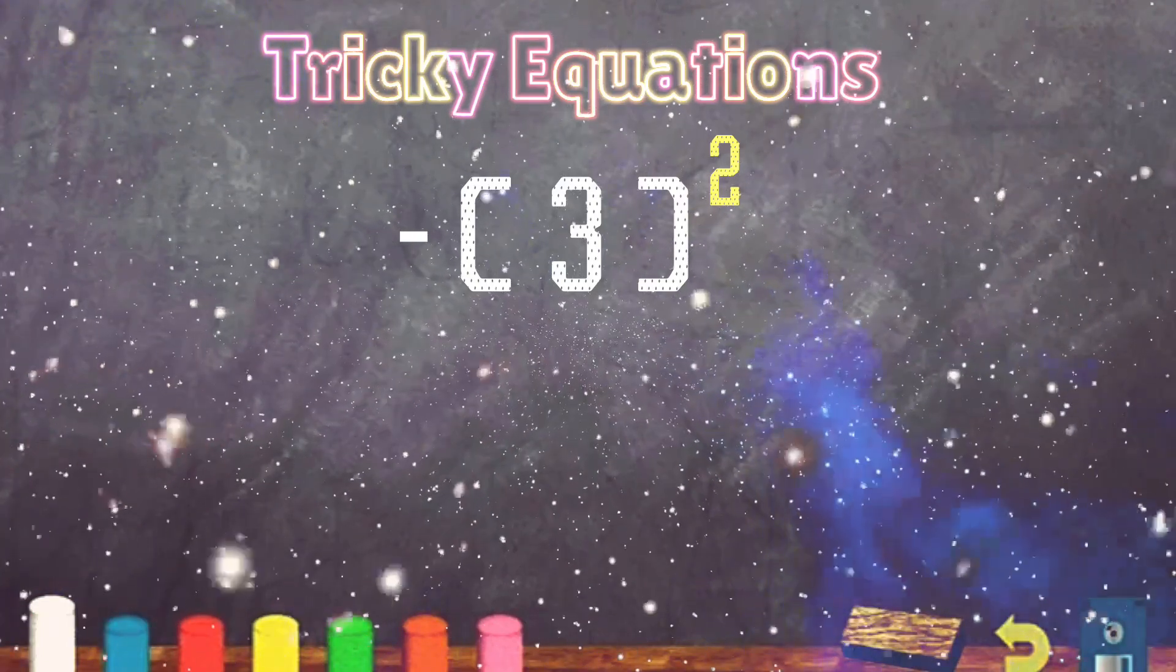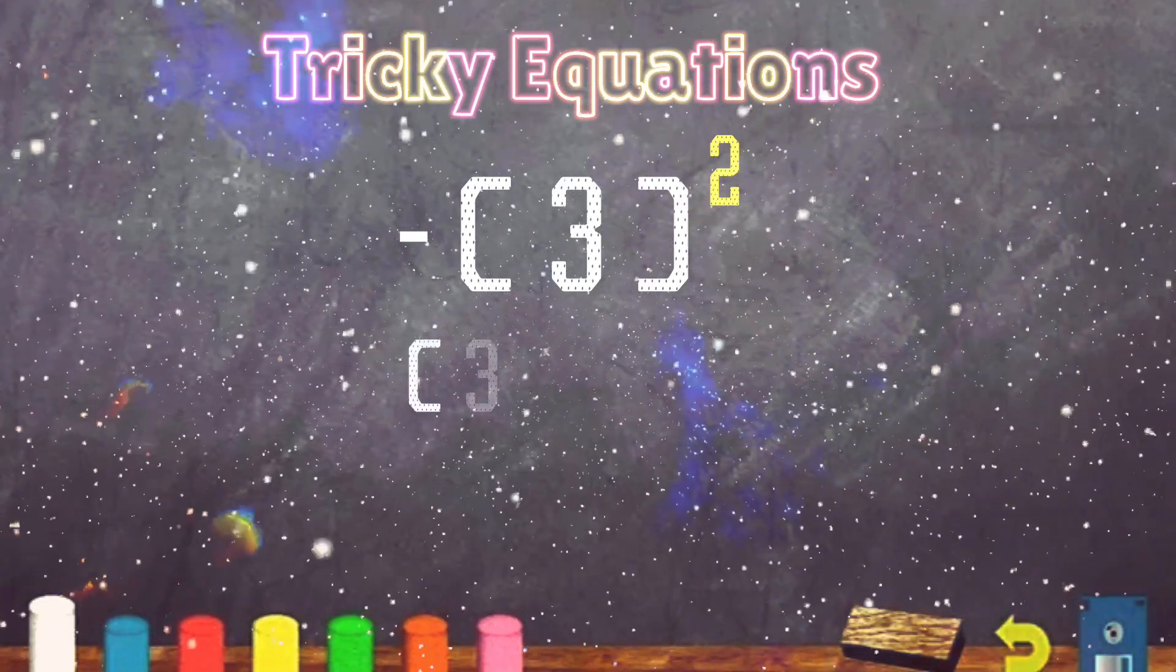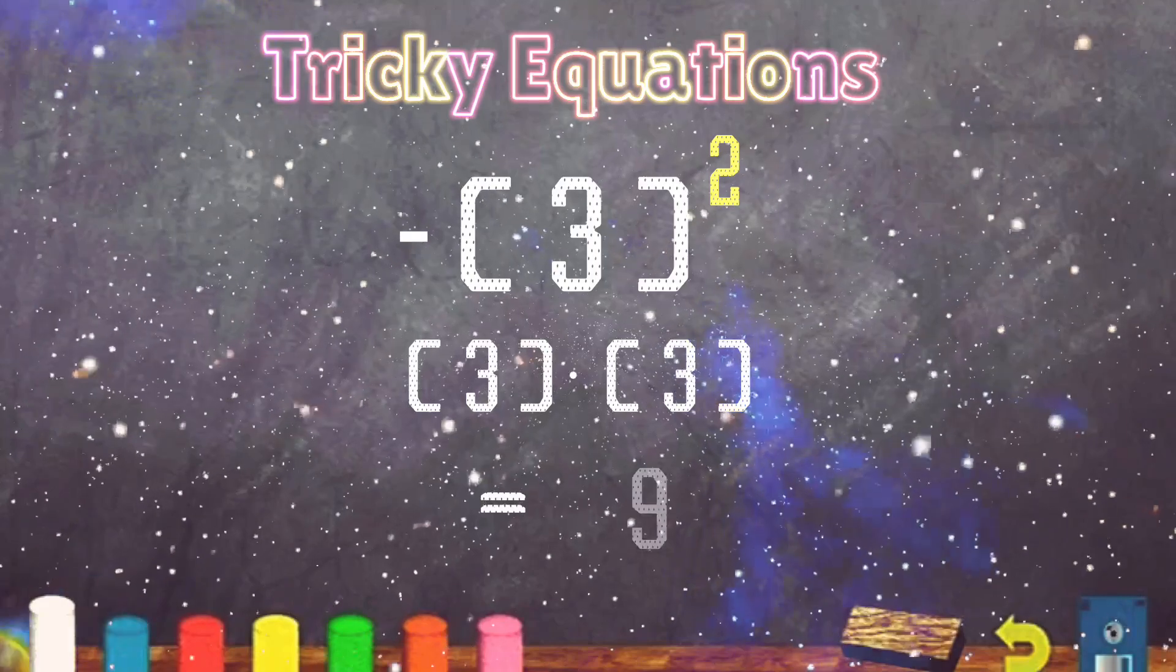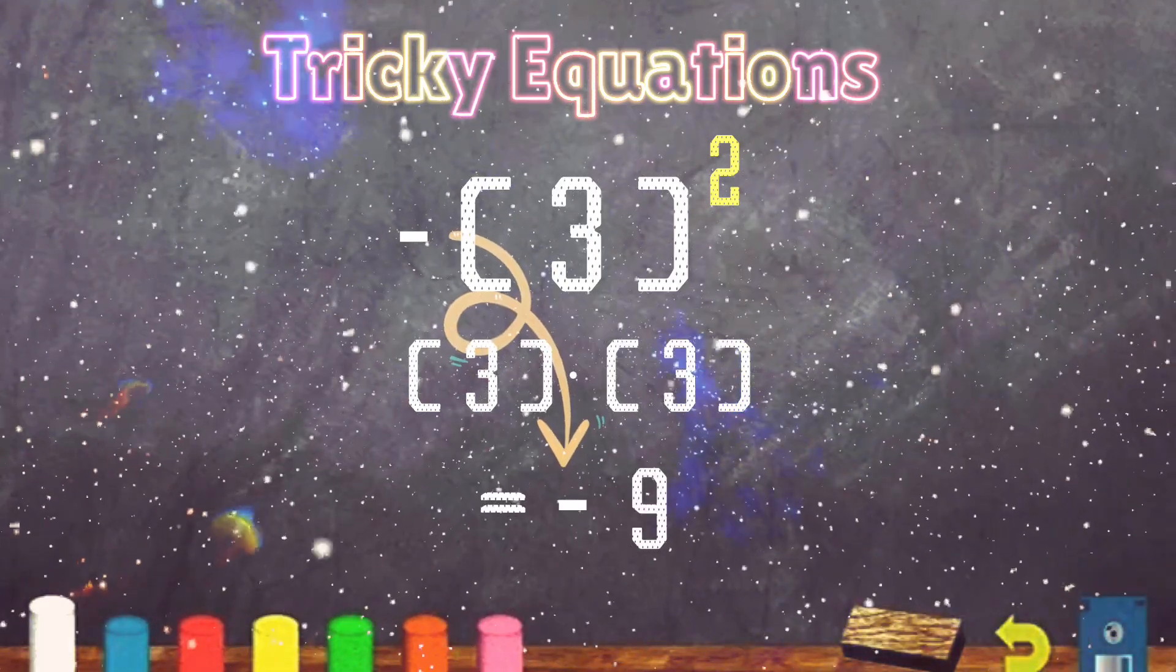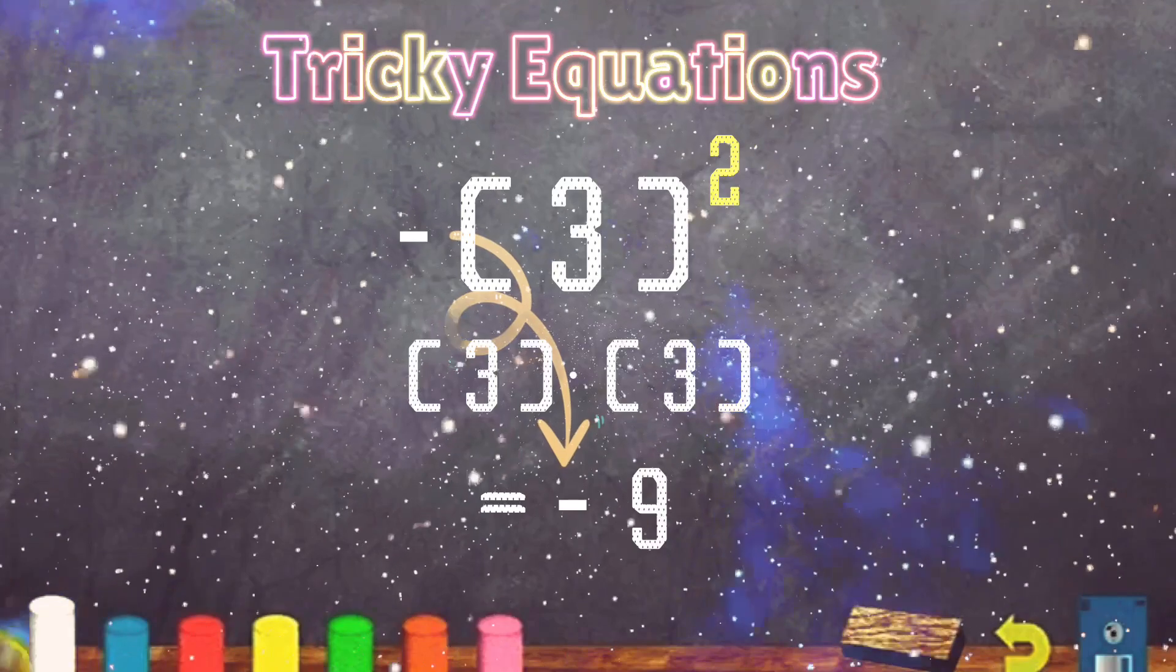The number will get squared. Number 3. 3 times 3 equals 9. And then we bring down the negative. And the answer is negative 9.